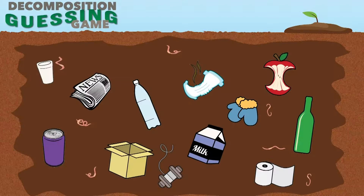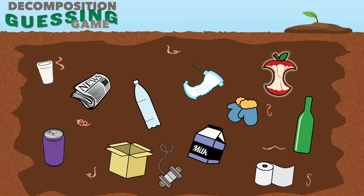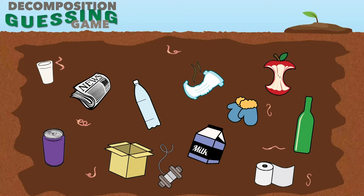Take a look at the screen you're watching right now. We have something called the decomposition guessing game, and there are a lot of different items on screen — such as a glass bottle, an apple core, a diaper, mittens, boxes, toilet paper, plastic water bottles, and more. I want you guys to pause the video here and take a couple of minutes to talk to your parents or friends to try to guess how long it takes these things to decompose inside the ocean once we've thrown them away.